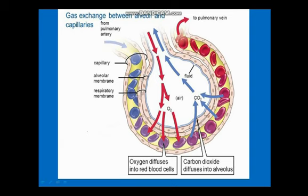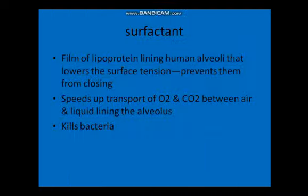Oxygen comes in and carbon dioxide moves out. Red RBCs indicate they are rich in oxygen, while blue RBCs indicate they are rich in carbon dioxide. Here at the alveoli, oxygen is taken in and carbon dioxide is released out.